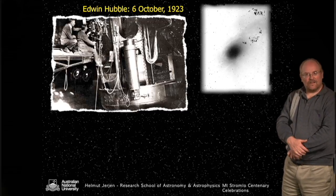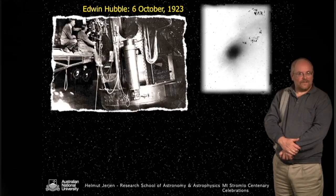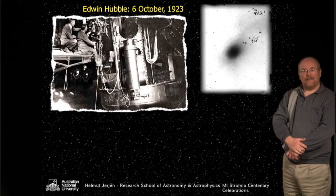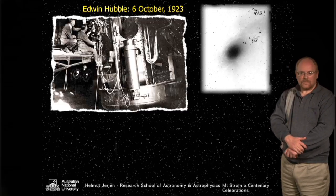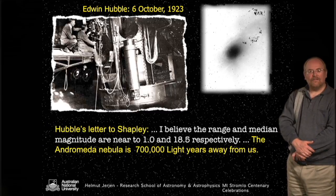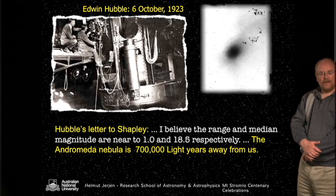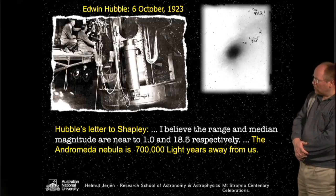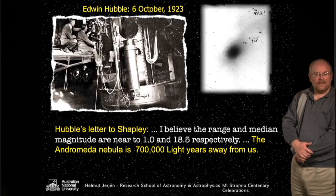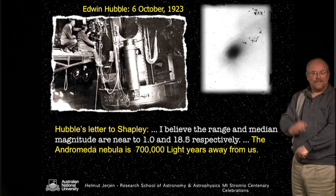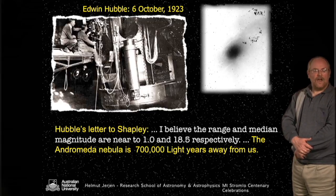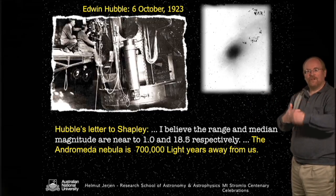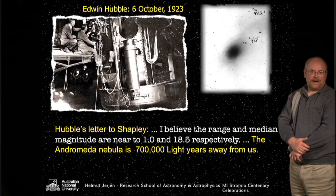And that's what he did. Cepheids are a very good distance indicator — you can use the periodic behavior of the light curve as a measurement of their distance. He wrote a letter to Shapley saying the range and median magnitude are near 1.0 and 18.5 respectively. The conclusion out of these measurements was that the Andromeda nebula is in fact 700,000 light years away from us — a much, much larger distance than what was predicted for spiral nebulae by Shapley's model.